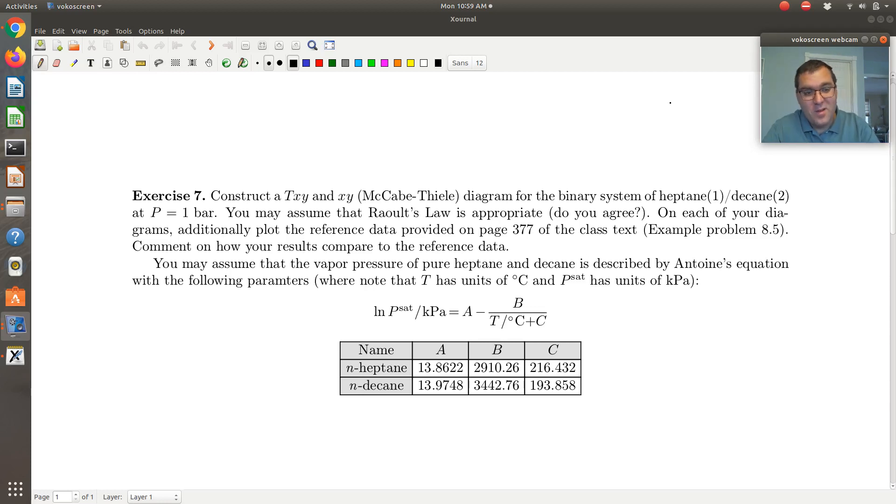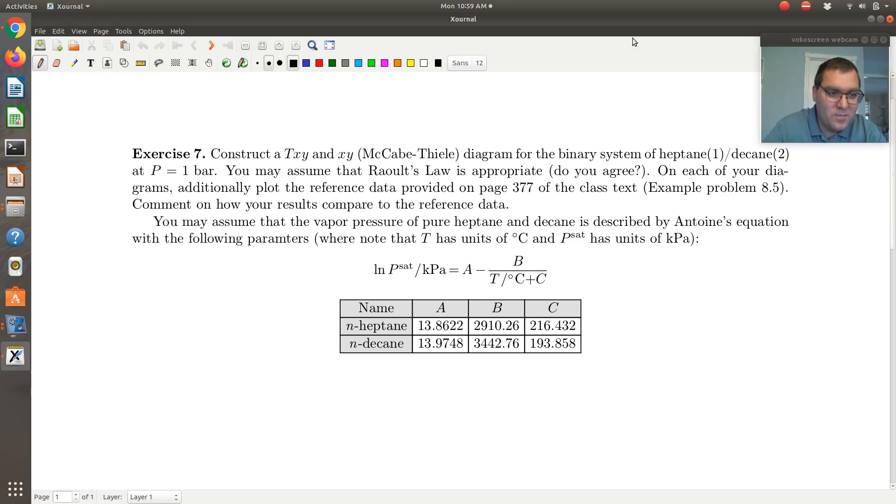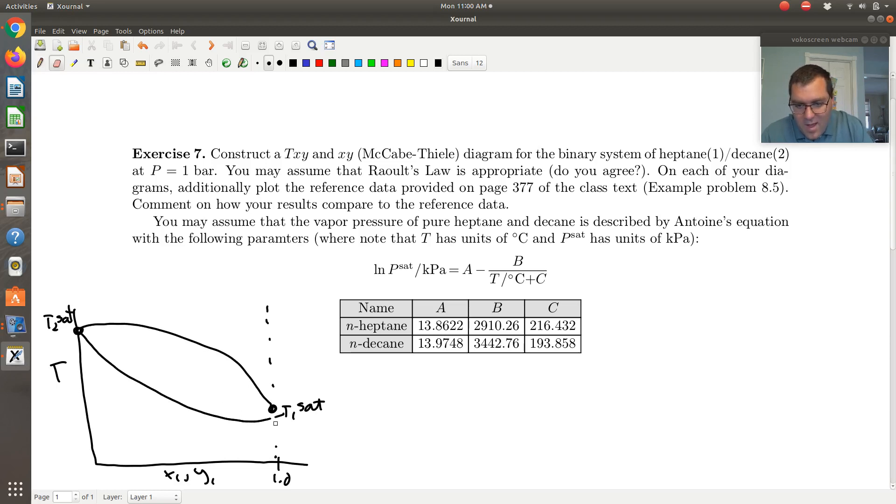So how would you go about doing this? As always, the first thing I might do is start with drawing a TXY phase diagram, since that's what I'm asked to calculate. So pure component limit, this would be T1SAT, which is less than T2SAT. And maybe my TXY looks something like this. Where we have heptane and decane, so a mixture of C7 and C10, definitely seems like that's something Raoult's Law should be applicable for, a mixture of two linear alkanes, where C7 would be more volatile than C10.